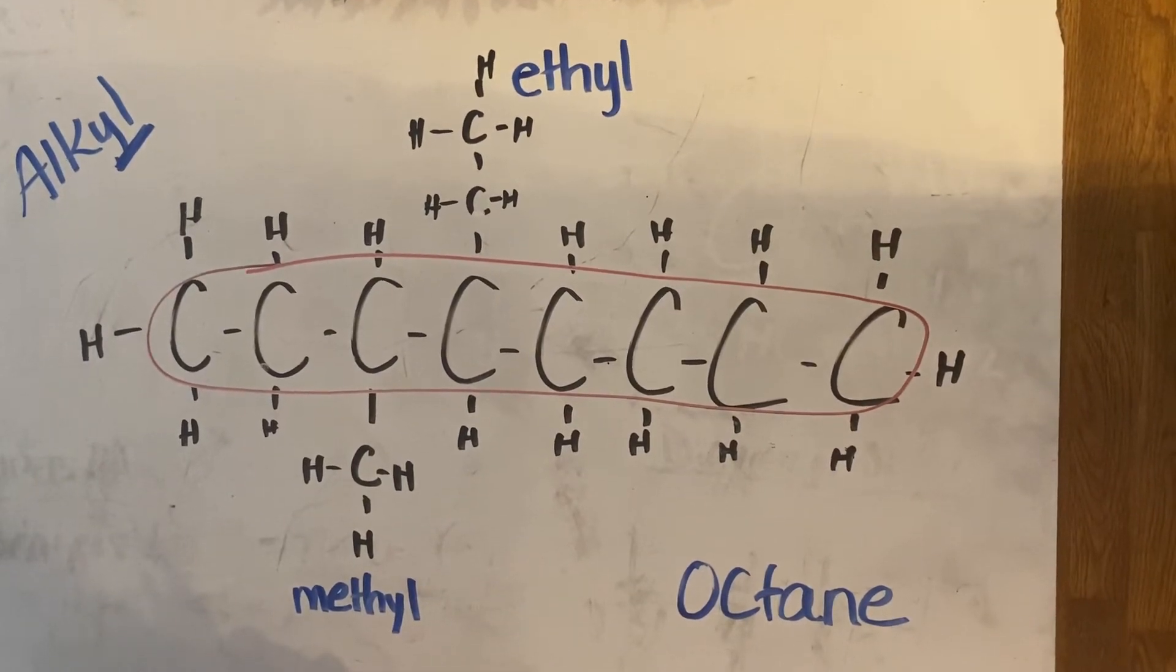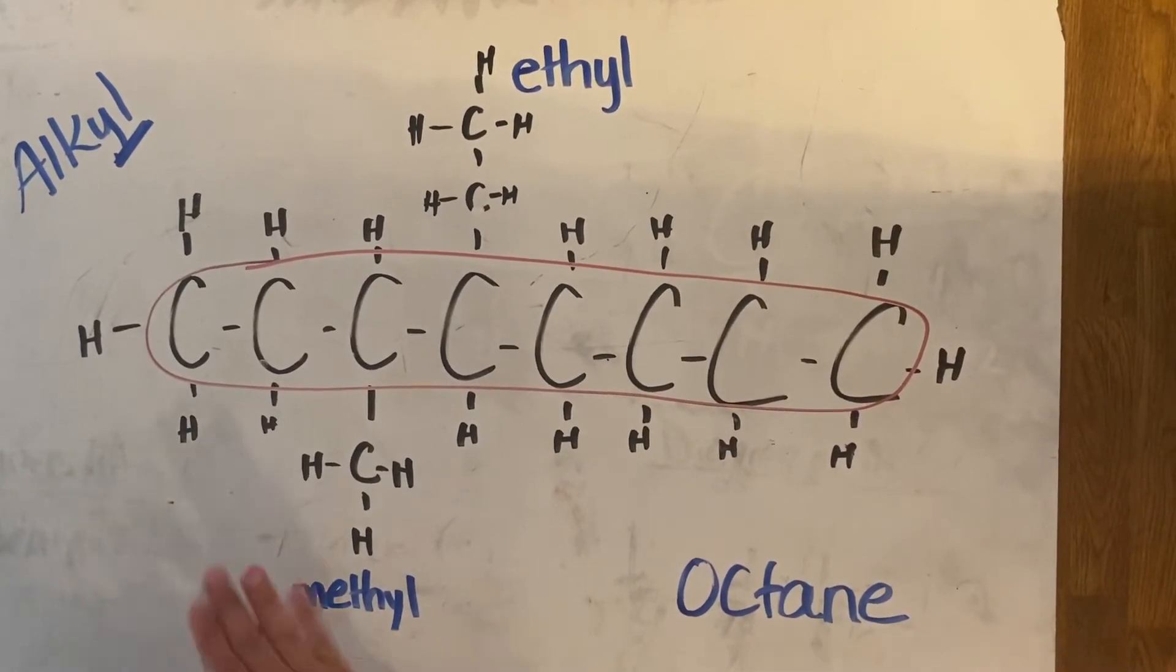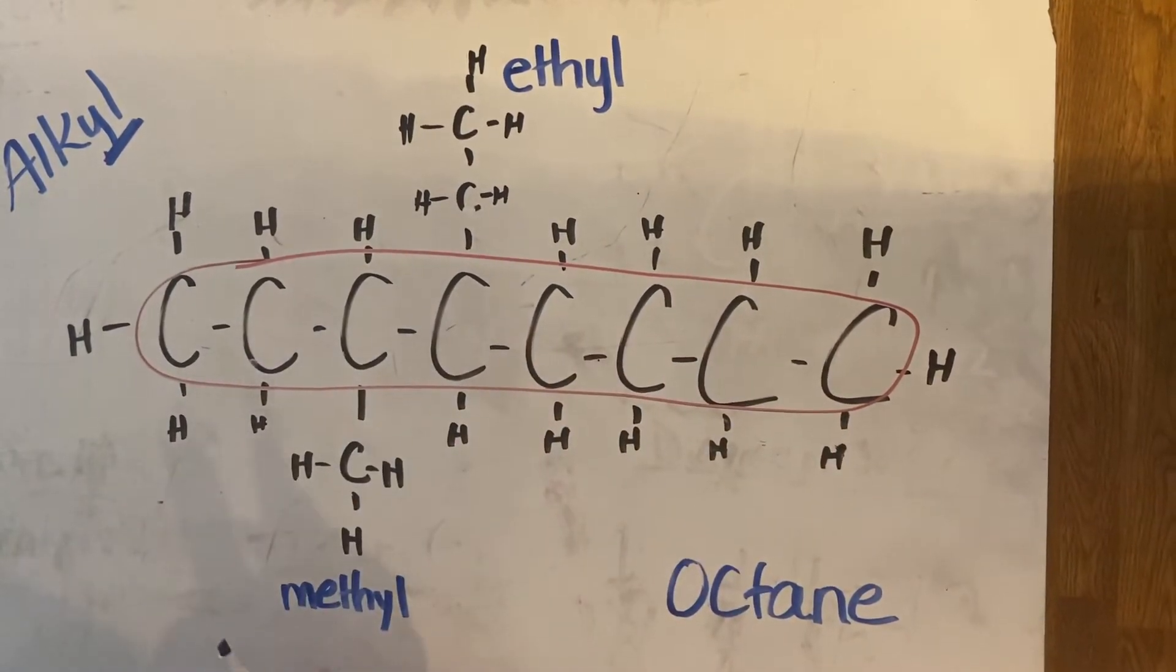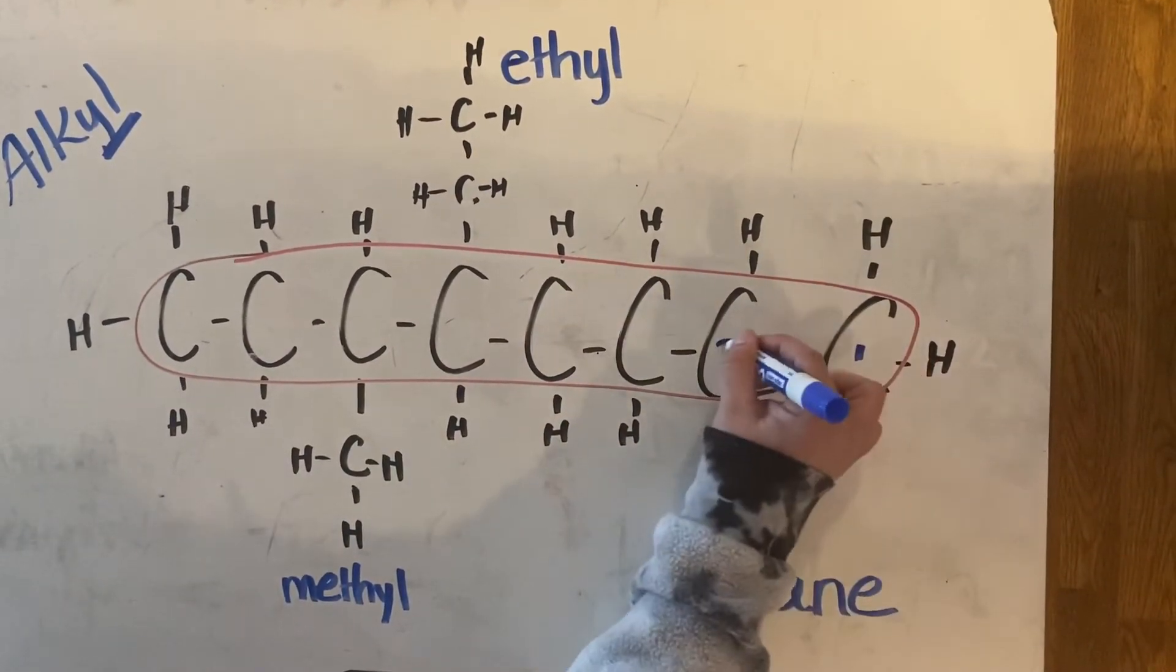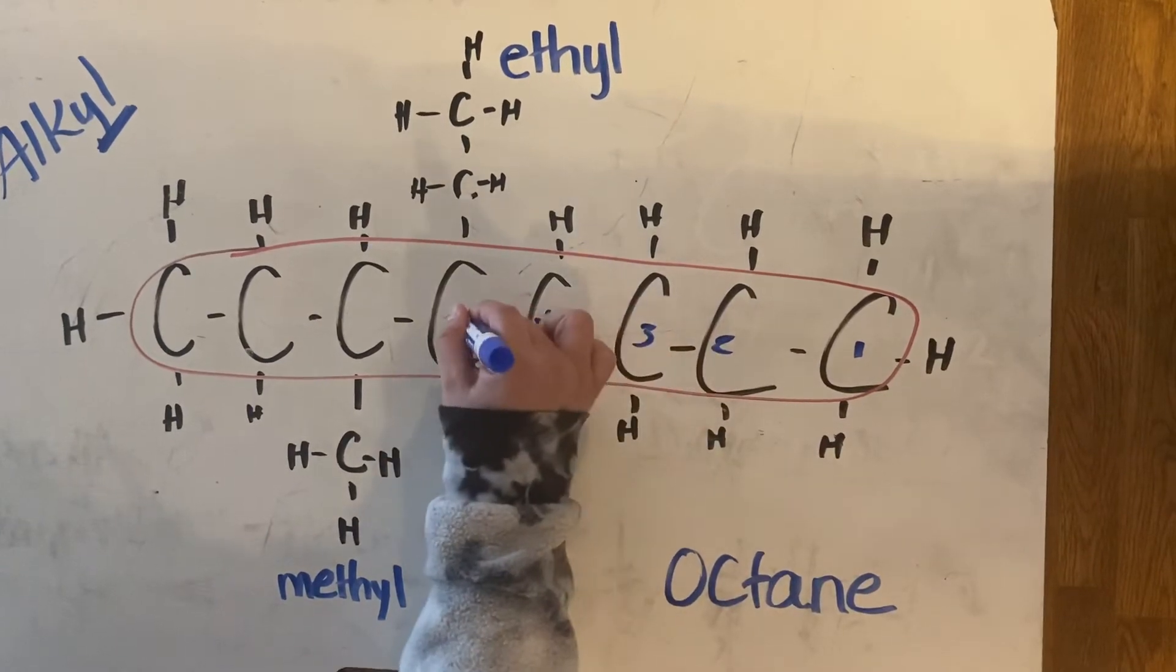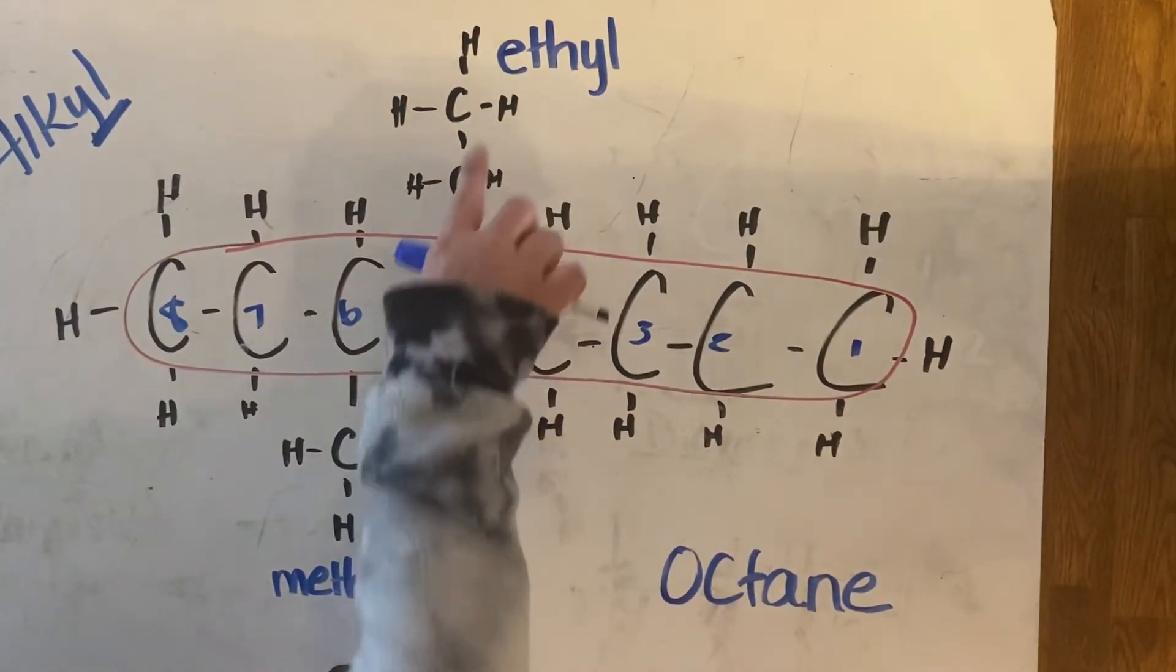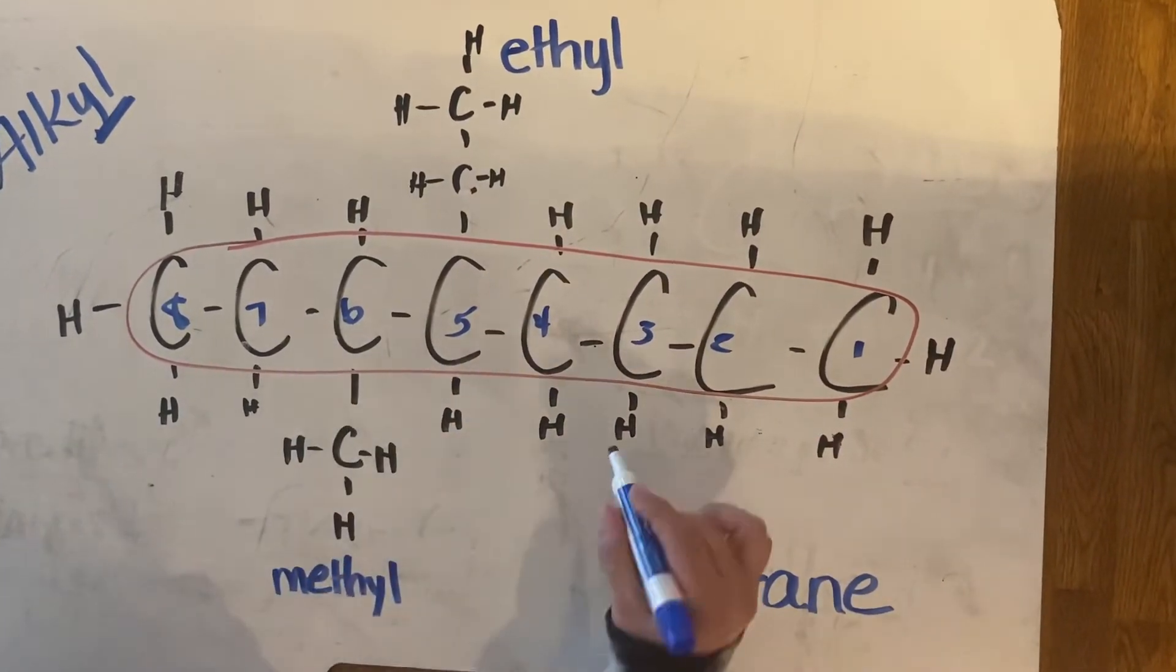Once again, we've got to make sure everybody knows exactly where those groups are. So you've got to count in both directions to see which way gives you the lowest numbers. If I start from the right and count like this, my chain looks like 5-ethyl, 6-methyl.